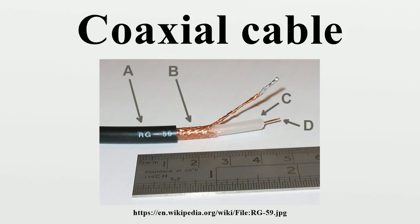At higher frequencies, skin effect increases the effective resistance by confining the conduction to a thin layer of each conductor. Shunt conductance per unit length is in siemens per meter; the shunt conductance is usually very small because insulators with good dielectric properties are used. At high frequencies, a dielectric can have a significant resistive loss. The characteristic impedance in ohms, neglecting resistance per unit length, is determined from the capacitance per unit length for most coaxial cables.